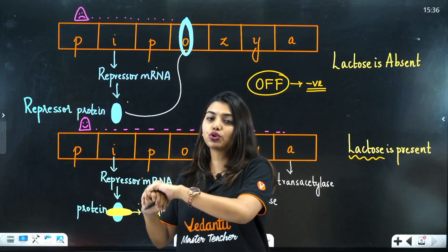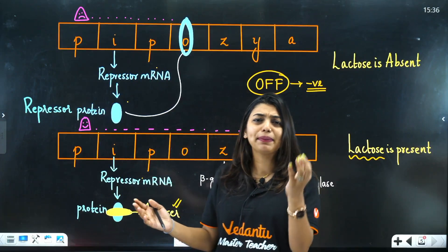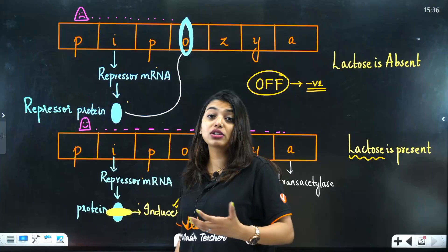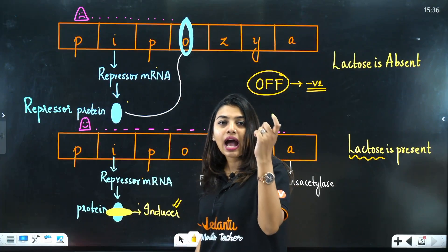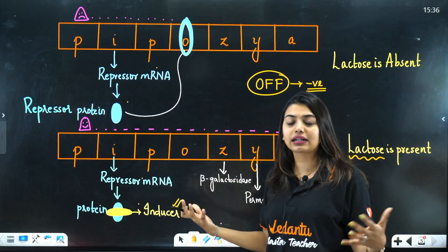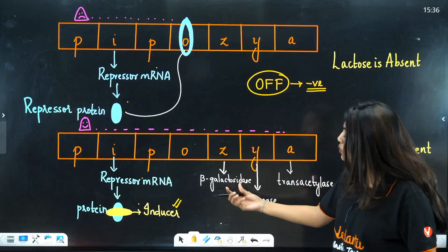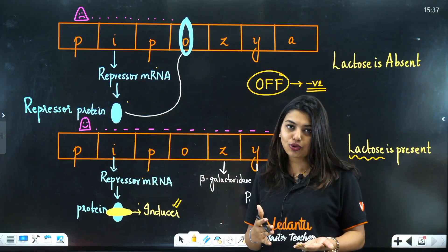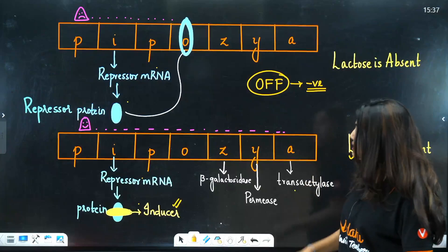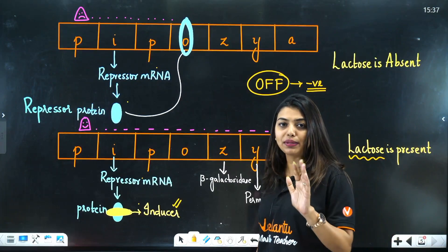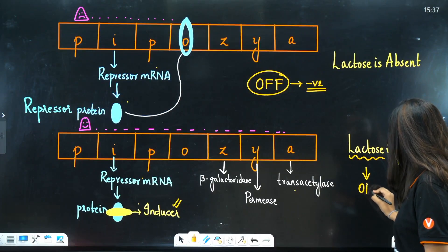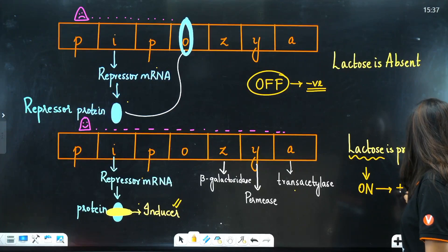When the inducer binds the repressor — like someone hugging you so you can't move — the operator is free. RNA polymerase is now happy and continues transcription. The structural genes become active and release beta-galactosidase, which breaks down lactose to galactose and glucose; permease, which increases cell permeability; and transacetylase, which enhances beta-galactosidase activity. This is positive regulation — the gene is switched on.